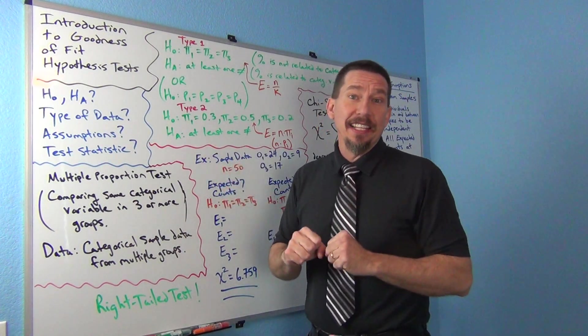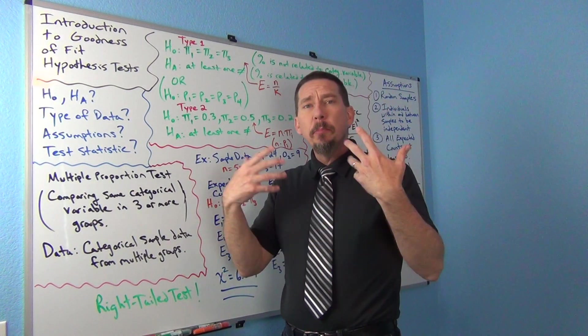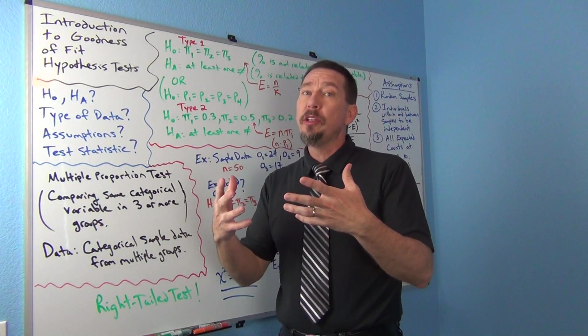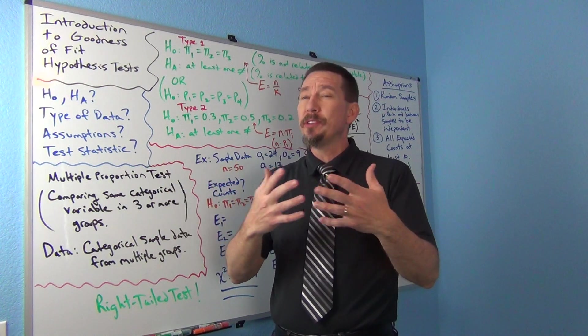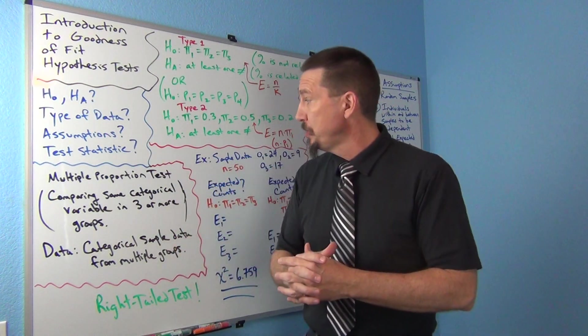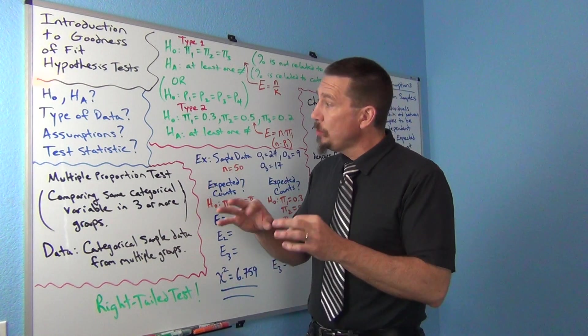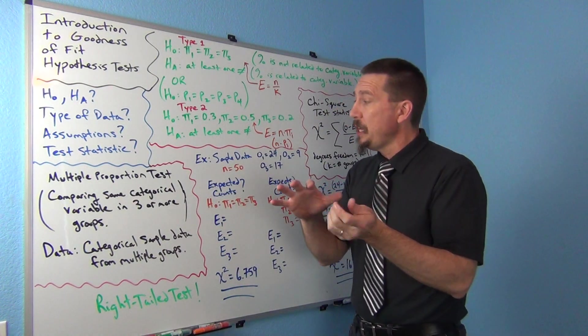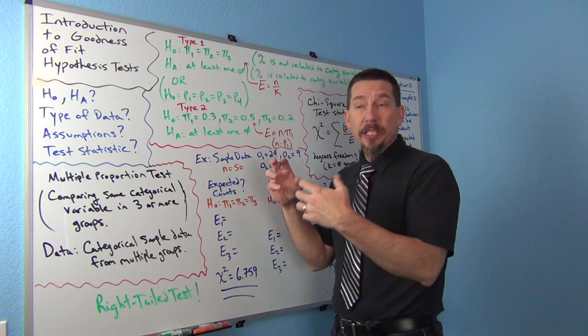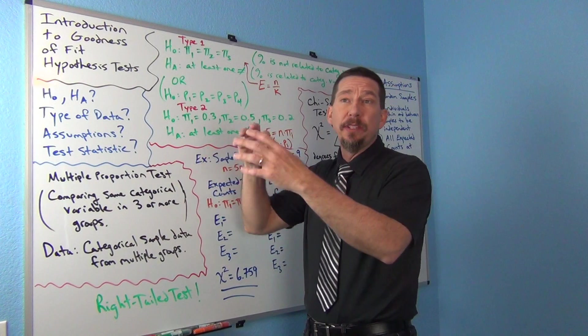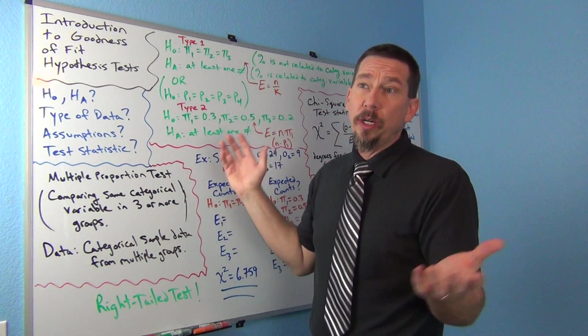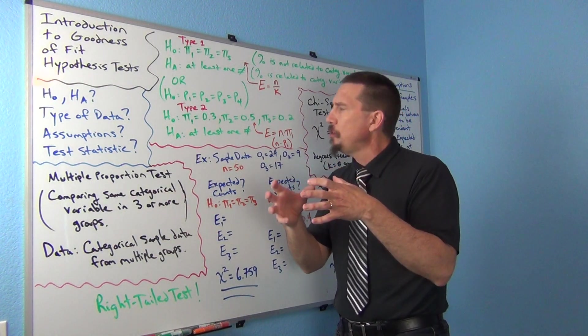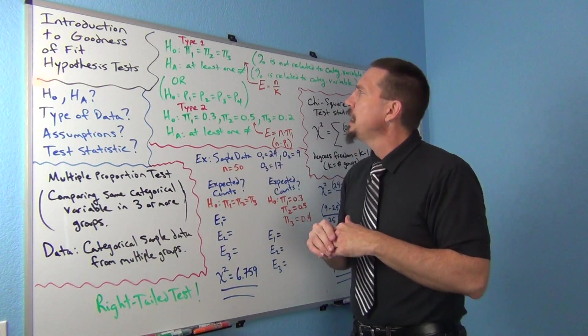So the Goodness of Fit Test, very famous, is sort of like the multiple proportion test. We're dealing with this situation where you have multiple groups and you're trying to figure out a percentage or compare a percentage from multiple groups. So let's start with the null and alternative hypothesis.